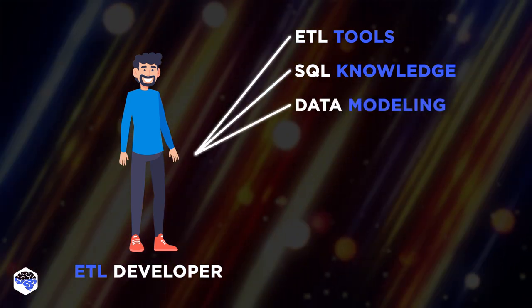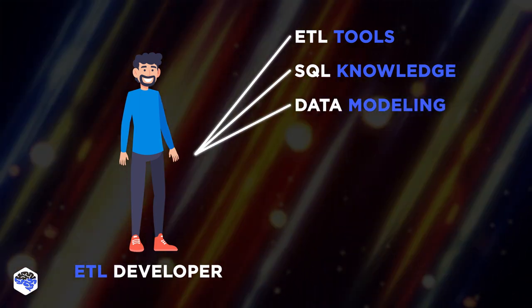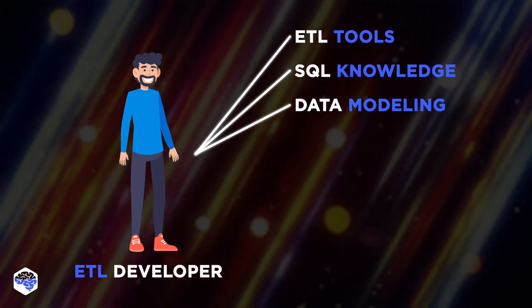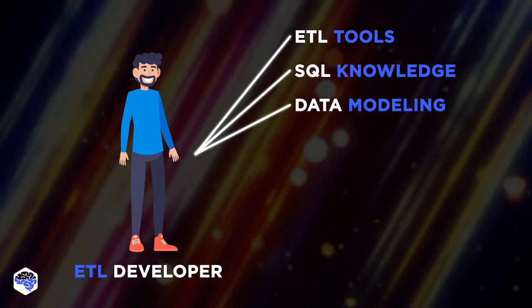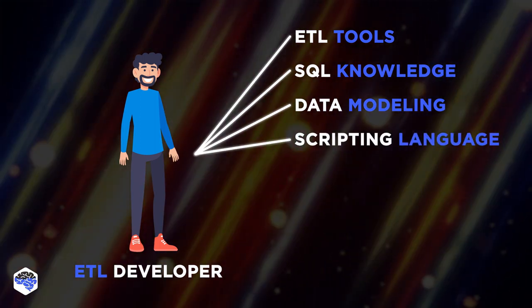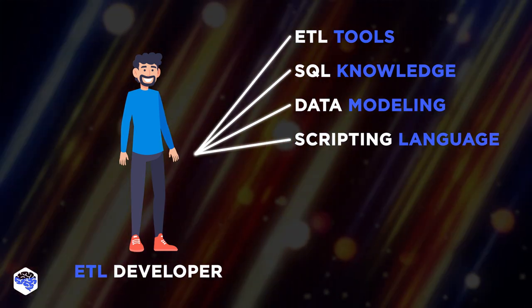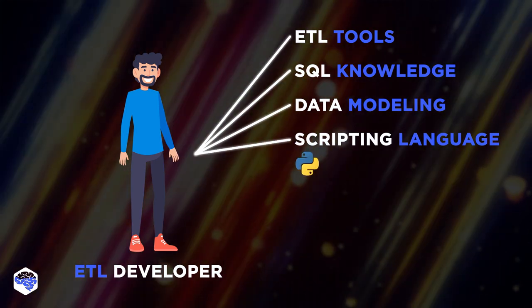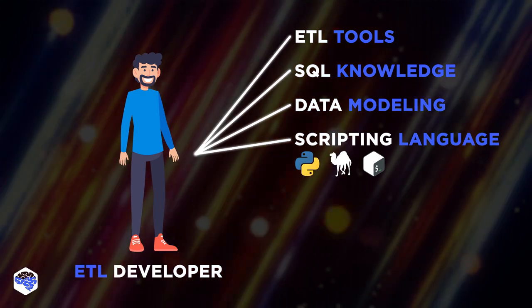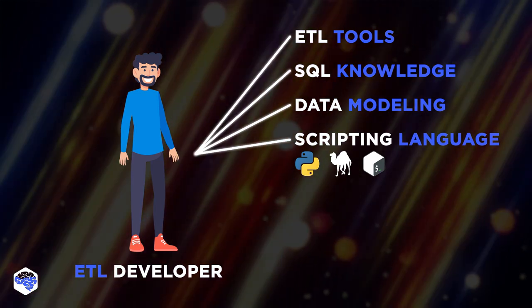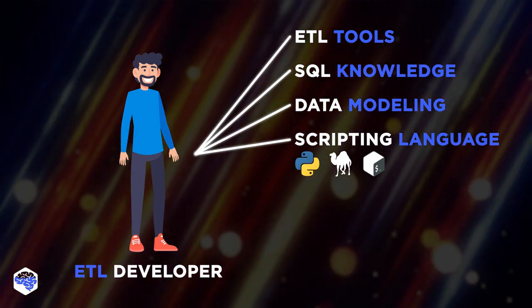Data modeling is a crucial skill in ETL because the data modeling process defines how the data will be transformed. Scripting language is another key skill — an ETL developer should be able to use Python, Perl, or Bash to write ETL code to adjust or automate certain processes.